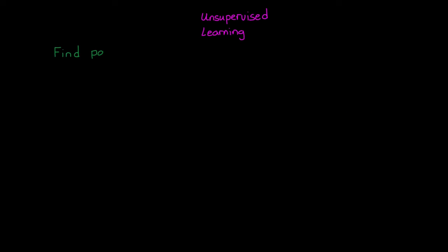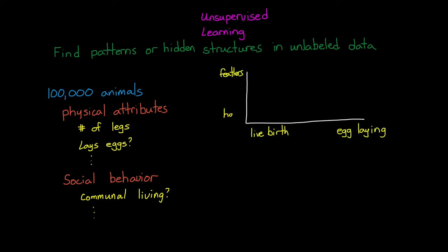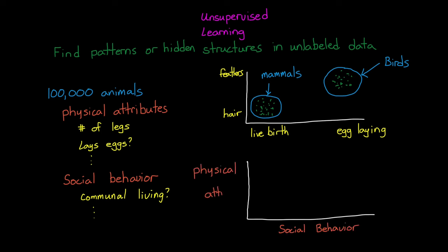Unsupervised learning is used to find patterns or hidden structures in data sets that have not been categorized or labeled. For example, imagine you collected information on 100,000 animals, like a bunch of physical attributes and social tendencies. Then you could use unsupervised learning to group the animals, or cluster them into similar features. This could be something obvious like grouping them into mammals and birds, or to group them by patterns that might not be as obvious, like finding correlations between physical traits and social behaviors that you didn't know about ahead of time.